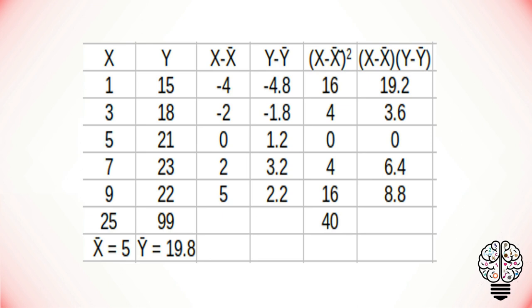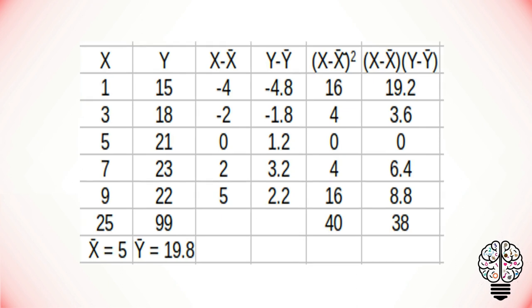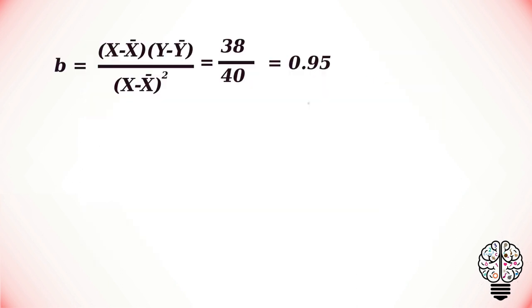And in the next column we have to find the product between x minus mean of x and y minus mean of y values and add them as well. Now we have to substitute the sum of the products value divided by the sum of the squares of x values.